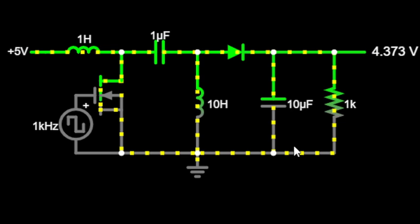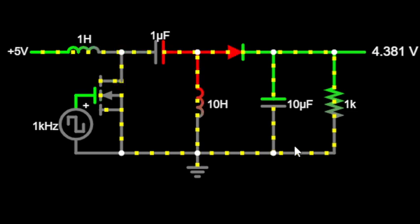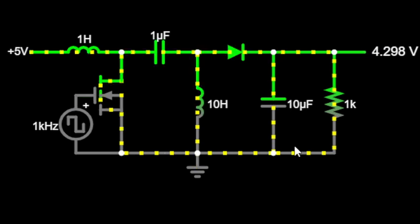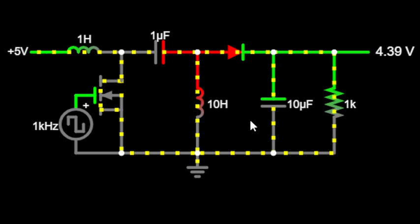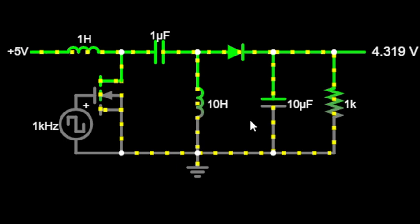Unlike traditional converters, the SEPIC has a unique topology that allows it to handle input voltages higher or lower than the output voltage. We can achieve this through using a coupled inductor and capacitors. As you can see here, we have a coupled inductor and capacitors, and both of these capacitors and inductors enable energy transfer between the input and the output.